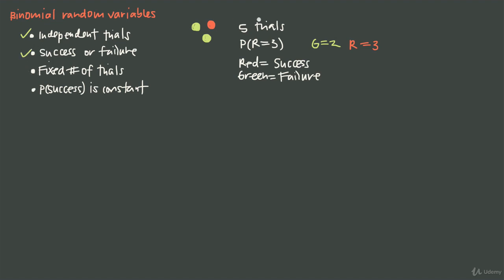Do we have a fixed number of trials? Yes — we said up front we're going to run exactly five trials. And the probability of success has to stay constant. The probability of success is the probability of getting red, which equals one-third, since there are three marbles and one is red. If we always put the marble back and shake the bag, the probability of getting red on any one pull is always one-third — it stays constant across all trials.